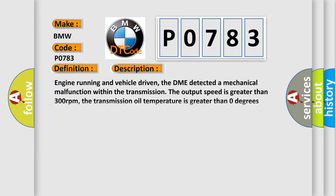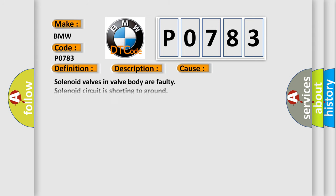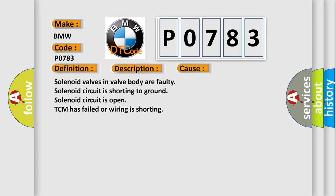Here is a short description of this DTC code. With the engine running and vehicle driven, the DME detected a mechanical malfunction within the transmission. The output speed is greater than 300 revolutions per minute, the transmission oil temperature is greater than 0 degrees Celsius, and the engine speed is greater than or equal to 600 RPM. This diagnostic error occurs most often in these cases: solenoid valves in the valve body are faulty, solenoid circuit is shorting to ground, solenoid circuit is open, or the TCM has failed or wiring is shorting.